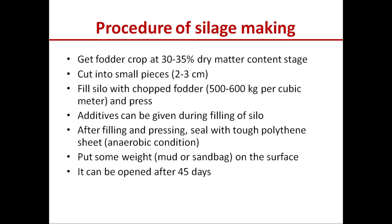Then cut the fodder crop into small pieces of 2 to 3 centimeter size. Fill the silo with chopped fodder at the rate of 500 to 600 kg of chopped green fodder per cubic meter area and press. Additives can be given during filling. After filling and pressing, seal with a tough polythene sheet to maintain the anaerobic condition in the silo. Put some weight like mud or sand bags on the surface so that no air goes inside.